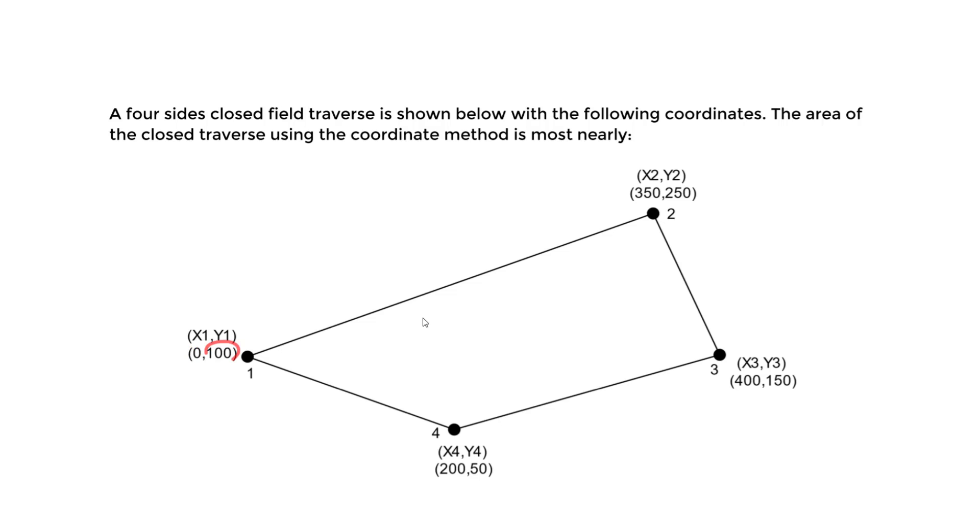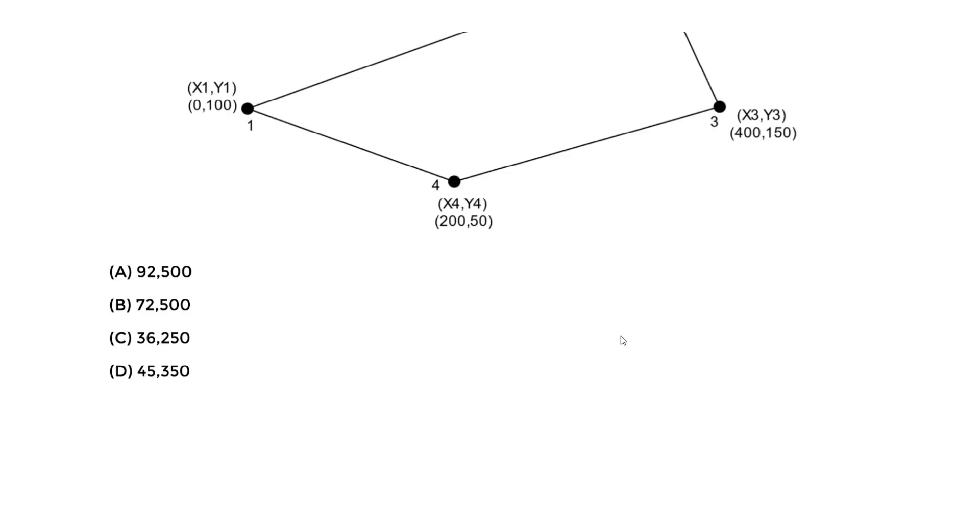At point 1, it's 0, 100. 0 in the x, 100 in the y. You can think of this as northing and easting. In this case, it's x1, y1, then x2, y2. We're given the coordinates for 3 and for 4. We are told the area of the closed traverse using the coordinate method is most nearly what? What is this area?